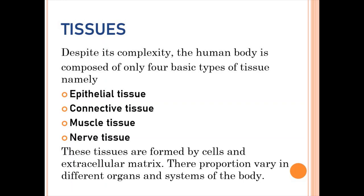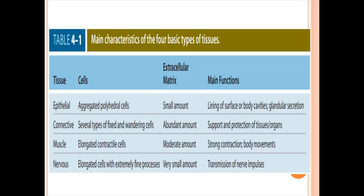In the body there are four basic types of tissues. Despite the complexity of the human body, there are only four: epithelial tissue, connective tissue, muscle tissue, and nerve tissue. All of these tissues are formed by cells and extracellular matrix. What differentiates them is the difference in proportion between the cells and the extracellular matrix.